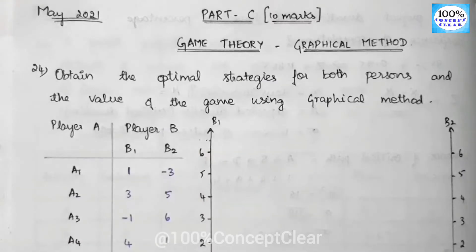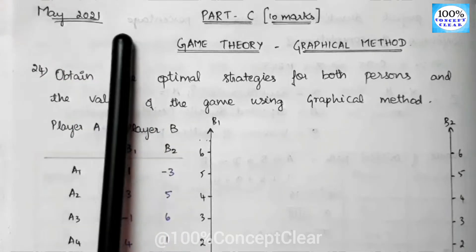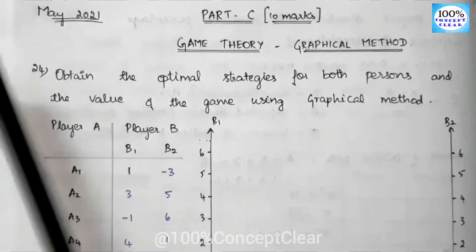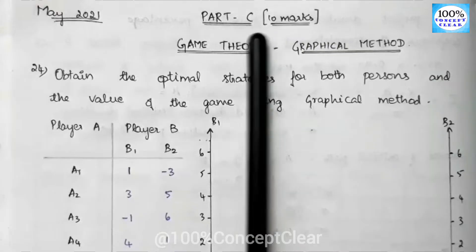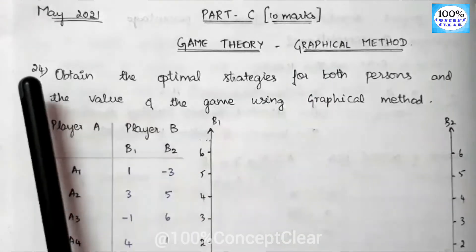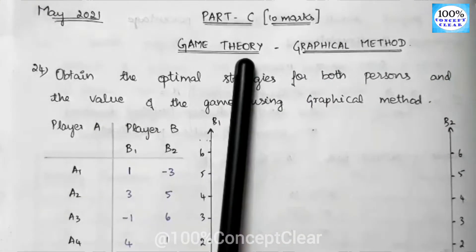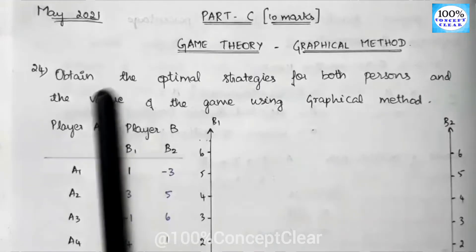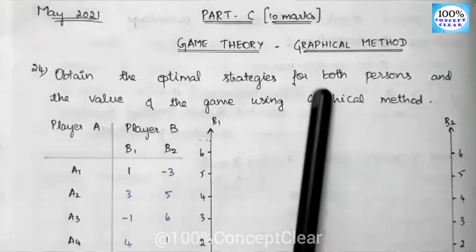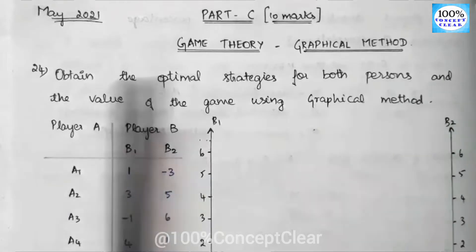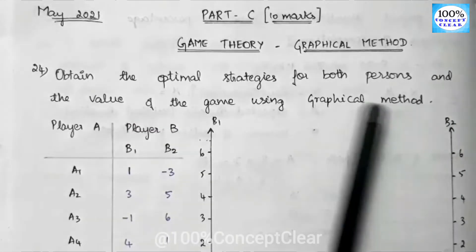In this video, we are going to solve the May 2021 question paper in the Operational Research subject. We will solve Part C, which is 10 marks. We will solve the 24th sum — the 24th sum is game theory. We have to find the optimal strategies for both persons and the value of the game using the graphical method.